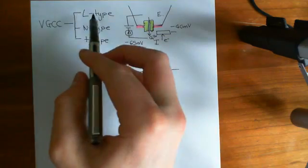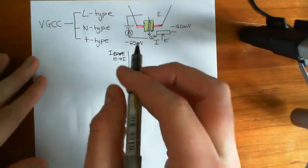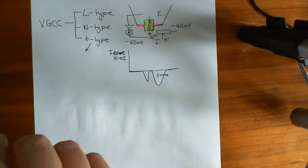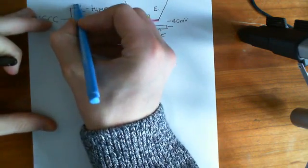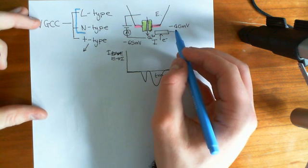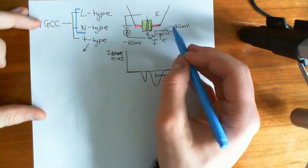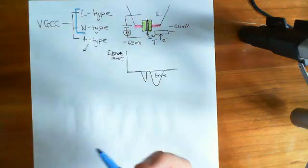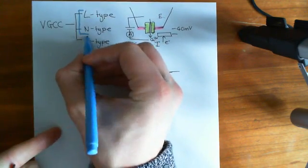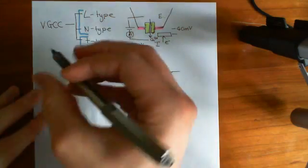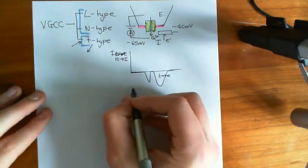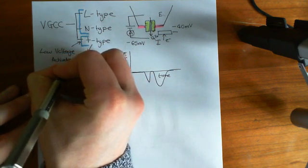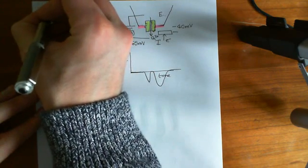The three types were discerned by their differing properties. The first distinguishing factor between T-type and L- and N-type is that L- and N-type calcium channels have a high threshold potential — you need to raise the electrical potential difference across the membrane to much higher levels to stimulate them. T-type channels are therefore low-voltage-activated (LVA), whereas L- and N-type are high-voltage-activated (HVA).